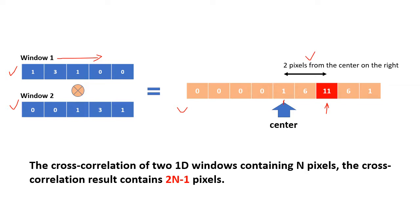Now let's look at one property of this 1D cross-correlation: the cross-correlation of two 1D windows containing N pixels will produce a result containing 2N minus 1 pixels. In our example we have 5 pixels and the cross-correlation result has 9 pixels. By identifying the peak intensity and comparing its location to the center, the computer can retrieve the displacement. That's the advantage the computer takes of cross-correlation.